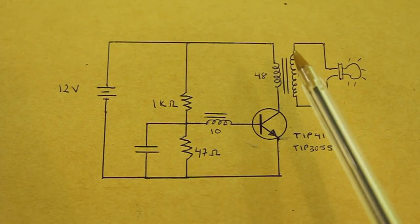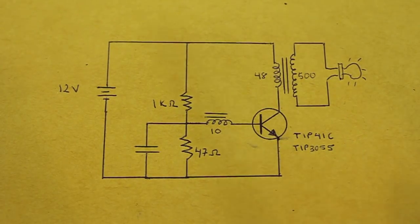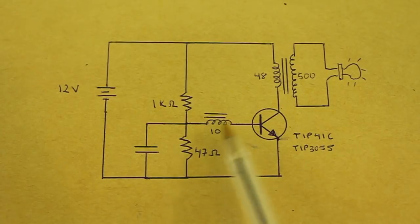The magnetic field starts to decrease and now induces a voltage on the feedback coil but it is of opposite sign, so it starts to turn off the transistor and the process continues until the voltage is at its minimum.